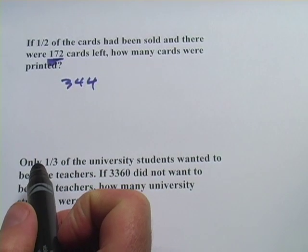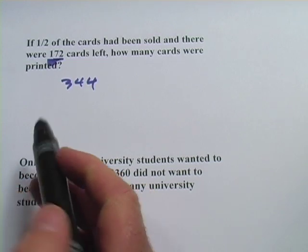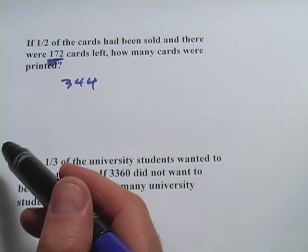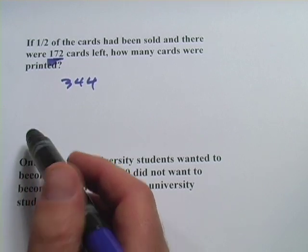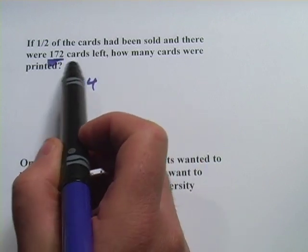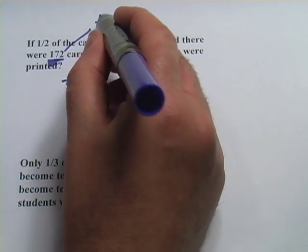But let me show you how to put this together in an algebraic equation, because sometimes the math won't be quite so obvious to you, and if you know how to set up the problem, you'll be able to solve it correctly. So this says half of the cards had been sold and there were 172 cards left. The first piece of logic we need to know here is that this 172 is also half.